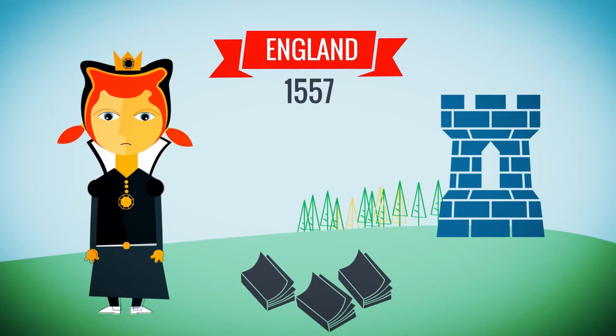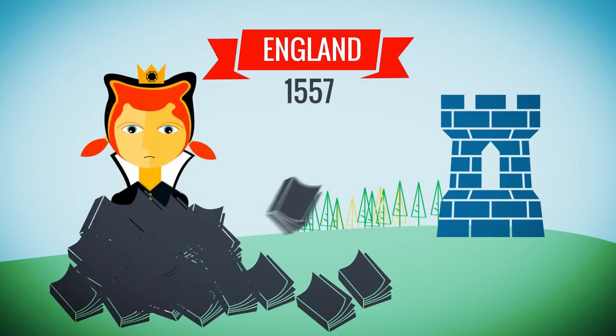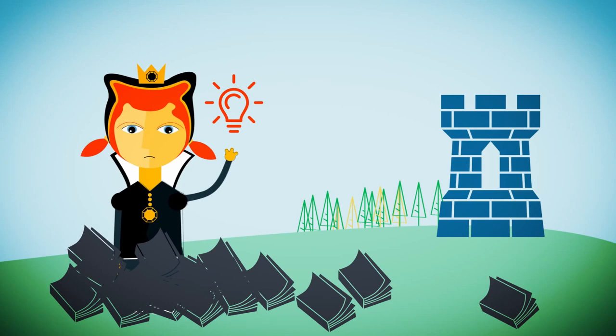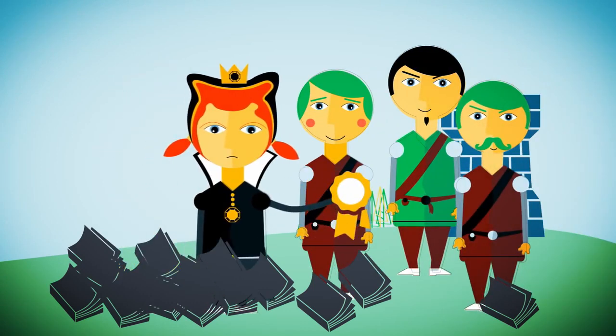Meanwhile, in England, in 1557, Queen Mary I found herself unable to cope with a number of critical works that were being printed. So she came up with a different approach. Rather than trying to censor everything, she started a select-exclusive club.